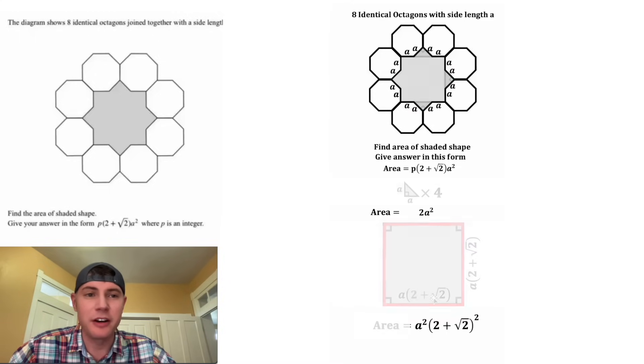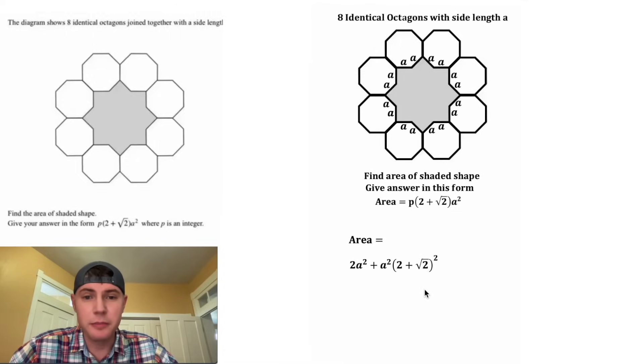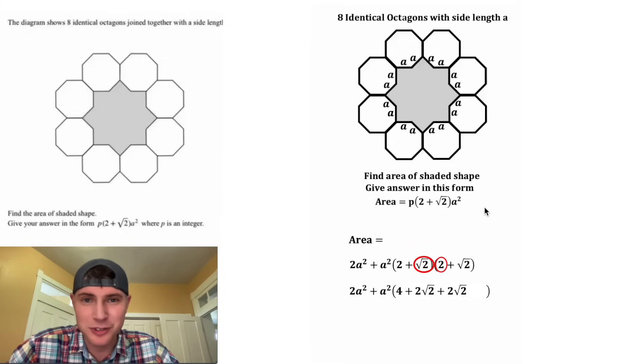So now if we add up this plus this, we'll have the area of the shaded shape. So this thing squared means this times this, and then we can multiply it out. So we have 2 times 2, which is equal to 4, plus 2 times the square root of 2, plus 2 times the square root of 2, plus square root of 2 times square root of 2, which is equal to 2.